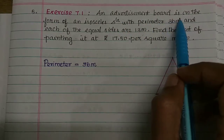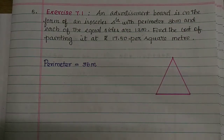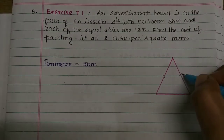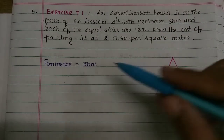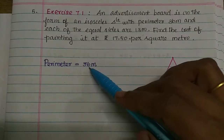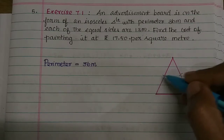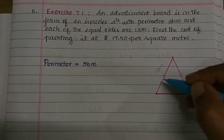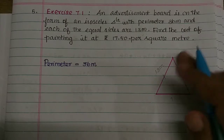The advertisement board is in the form of an isosceles triangle. An isosceles triangle means two sides are equal. So this triangle has two equal sides with perimeter 36. Each of the equal sides are 13 meters. So if this side is 13 meters and this side is 13 meters, the total of the three sides is 36.